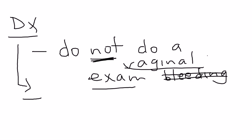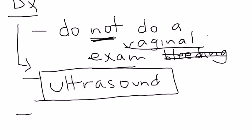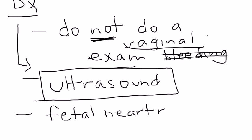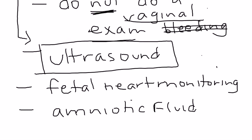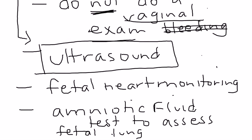The way you diagnose it is with an ultrasound — either transvaginal or transabdominal. Other things in the workup include getting a fetal heart rate monitor going to monitor the fetus. If the situation is so serious that you may need to deliver the fetus, you want to assess fetal lung maturity by testing the amniotic fluid, because a premature fetus's lungs may not be developed enough to survive outside the amniotic sac.